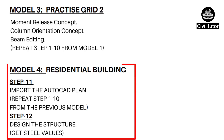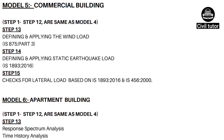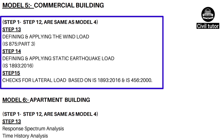The fourth model is on a residential building and includes all 10 steps from the previous models. In addition, we will be importing the AutoCAD plan and then designing the structure. Model 5 is based on a commercial building, which includes all steps of Model 4 plus 3 more steps: defining and applying the wind load, defining and applying the static earthquake load, and checks for lateral loads based on IS 1893:2016 and IS 456:2000.